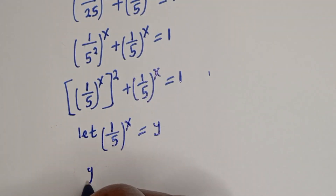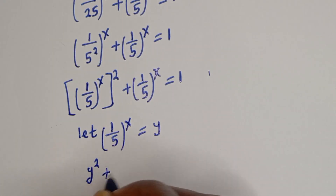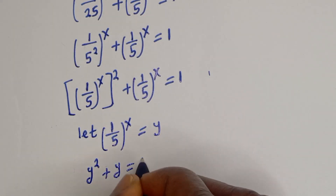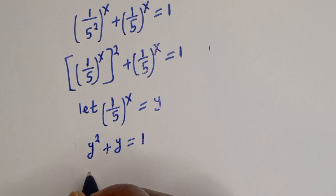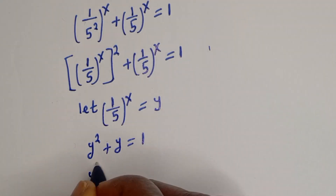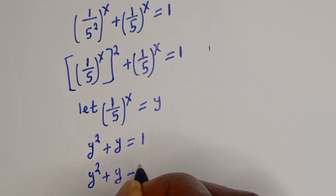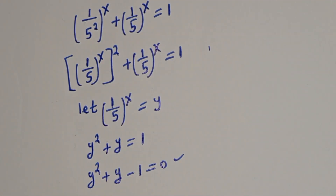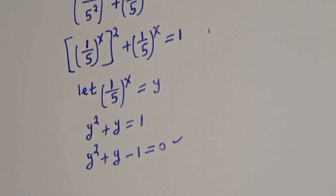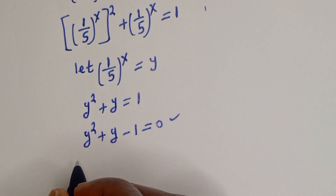With the substitution, we have y squared plus y equals 1. Rearranging, y squared plus y minus 1 equals 0. This is a quadratic equation which can be solved using the quadratic formula.